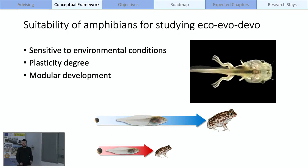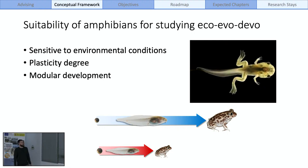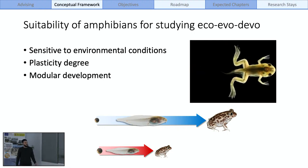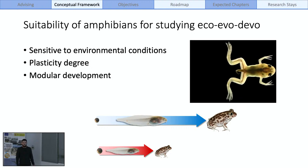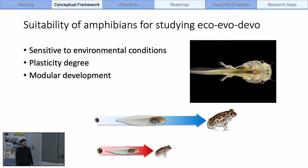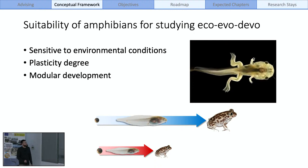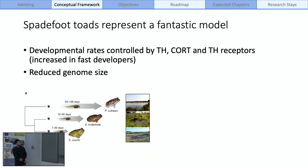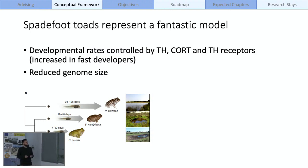They can display a wide range of plastic responses to environmental factors and they have a modular development. They are able to decouple growth from differentiation, which allows them to delay or accelerate their development, and maybe arrive to metamorphosis later or sooner depending on the environmental conditions. Our group is focused mainly on spadefoot toads, which have evolved a widely divergent developmental rate and different degrees of sensitivity to the environment.